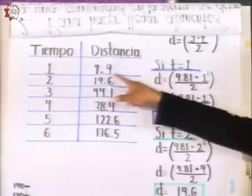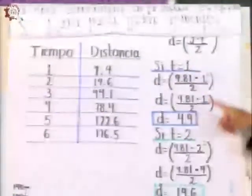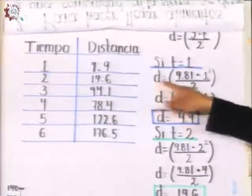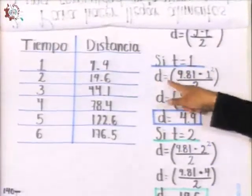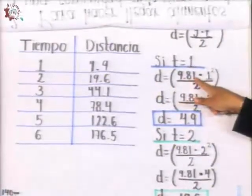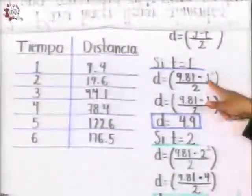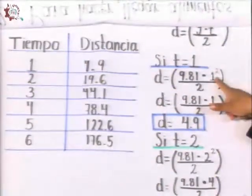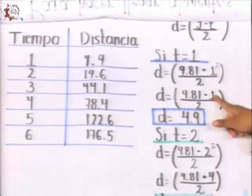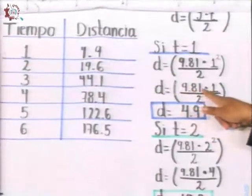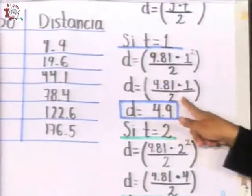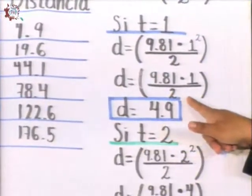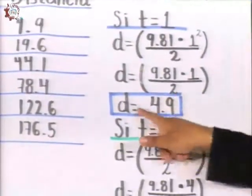For example, if our time is 1 second, if t is equal to 1, d is equal to, substituting in the formula, equal to 9.81 times 1, which is the variable t, al cuadrado, entre 2. 1 al cuadrado, we know is 1, so we substitute 9.81 times 1, entre 2, the result is 4.9. This is our first value for d, or the distance.